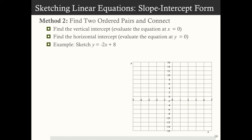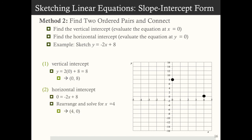Let's do one more example using vertical and horizontal intercepts. Sketch y equals negative 2x plus 8. First, the vertical intercept: set x equals 0 and get y equals 8, giving ordered pair (0, 8). Then the horizontal intercept: set y equals 0, giving 0 equals negative 2x plus 8, and solving gives x equals 4 — so the horizontal intercept is (4, 0). Connect these two points with a ruler and that's the line.